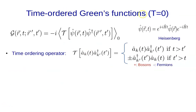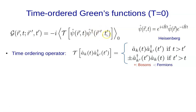Let's introduce the time-ordered Green's functions at T equals zero temperature. We'll discuss finite temperatures later in the course. The time-ordered Green's function at position r, time t, position r', time t' is defined as minus i times the expectation value in the ground state of the time ordering of the product of a destruction field operator acting at position r, time t, times the creation field operator acting at r', t'.